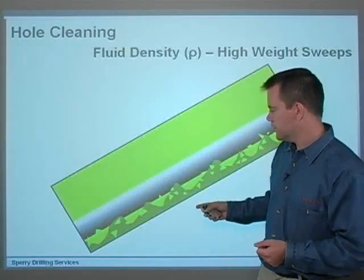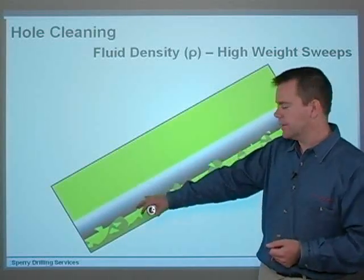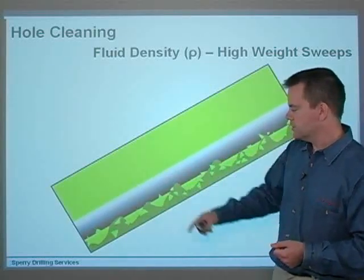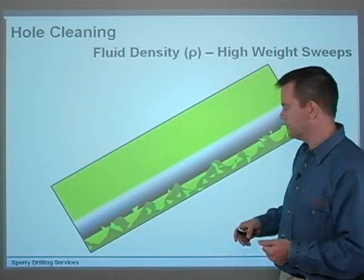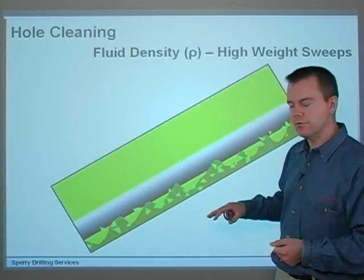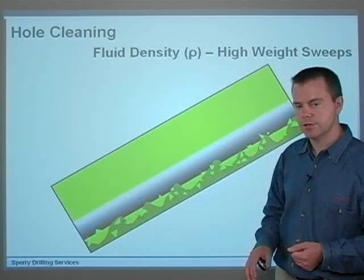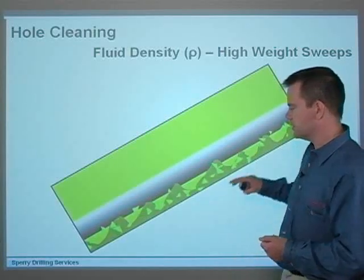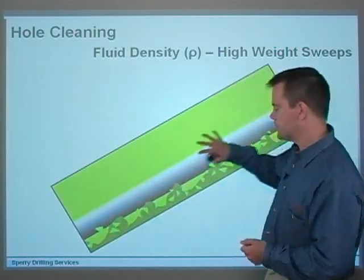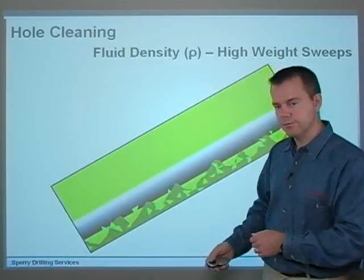If we have a look at this wellbore, we've got eccentric pipe because it's lying on the low side, being rotated. It can be rotated or not rotated in this case. We've got cuttings beds on the bottom of the hole coming up over the side of the pipe, increasing the torque and drag. A whole lot of cuttings sitting there. You've got mud flowing past here, and we've got a high flow rate up the top and low flow rate down at the bottom.